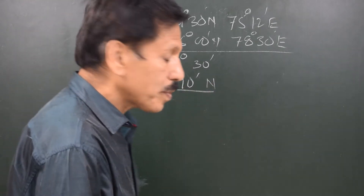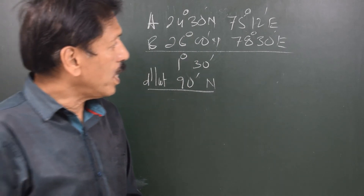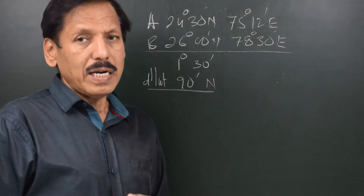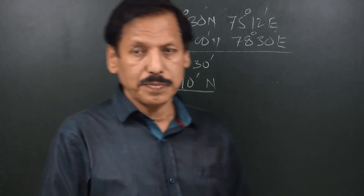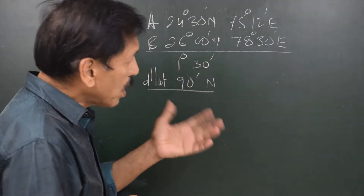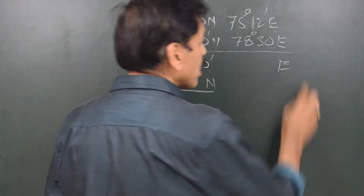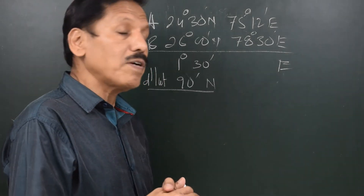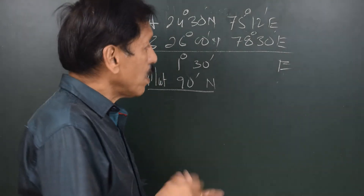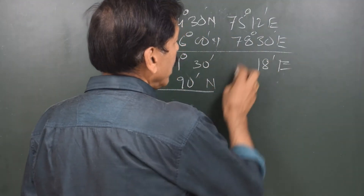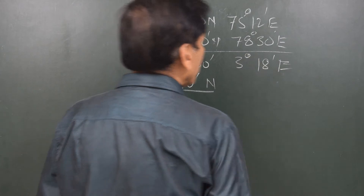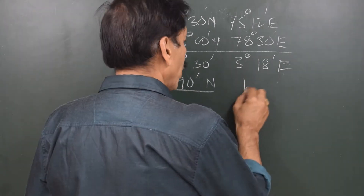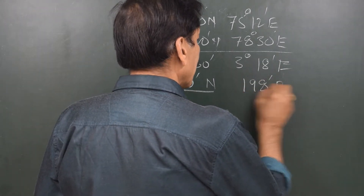What about D-Long? The names are same — initial and final are both east. You are going from 75° E to 78° E, so your easterly longitude is increasing. Simple common sense: if your easterly longitude is increasing, you must be going east. Same name, so you subtract — that gives 3° 18', which is 198 minutes east as the D-Long.